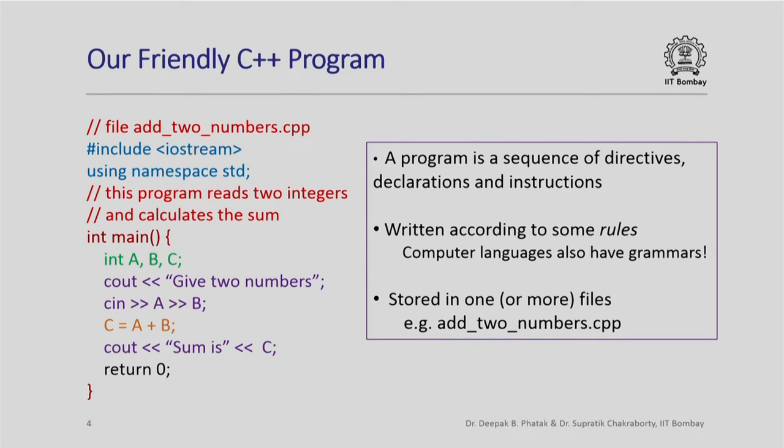The sequence of instructions, directives, and declarations have to be written according to some rules. Just like natural languages such as English, Hindi, or Marathi have grammars and sentences must follow those rules, computer languages also have grammars that define the rules for writing computer programs. So when we write a C++ program, it has to be according to the rules of C++ grammar.